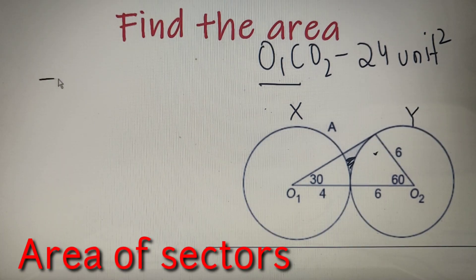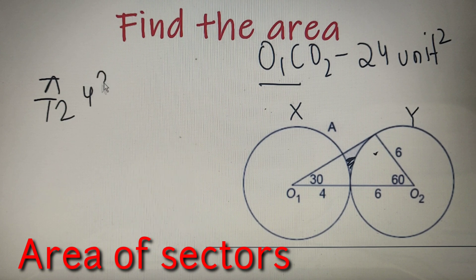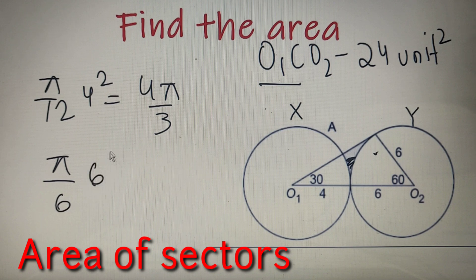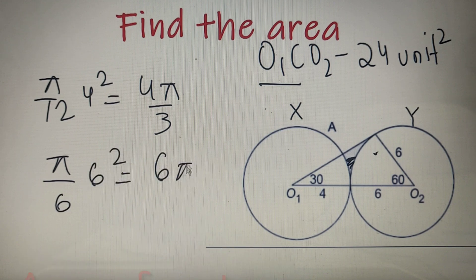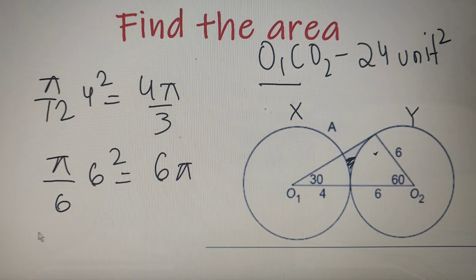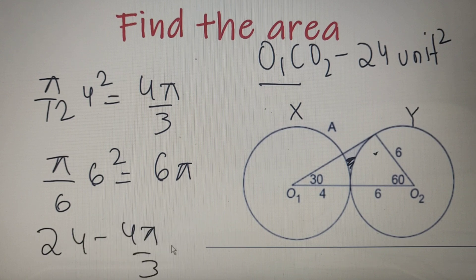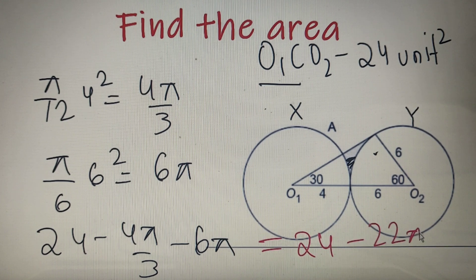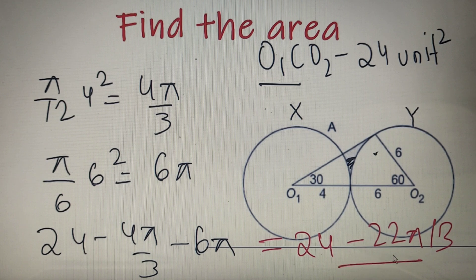The area of the first sector will be equal to π/12 times 4 square, which is equal to 4π/3. And the area of the second sector will be equal to π/6 times 6 square, which is equal to 6π. So our final answer is nothing but 24 minus 4π/3 minus 6π. And upon further calculation, this answer comes out to be 24 minus 22π/3.